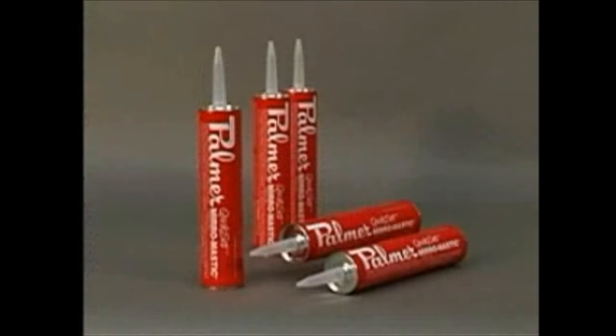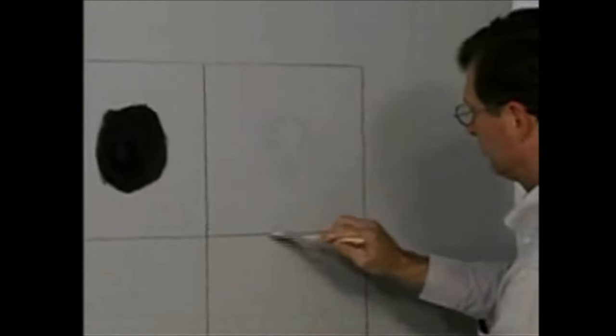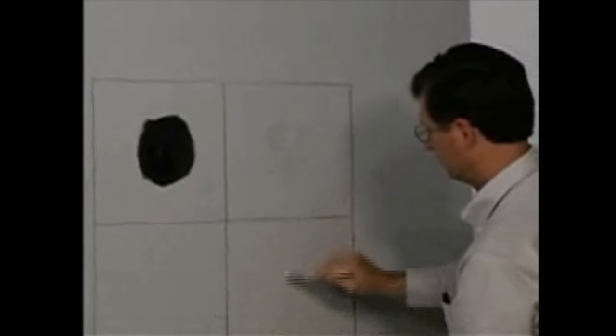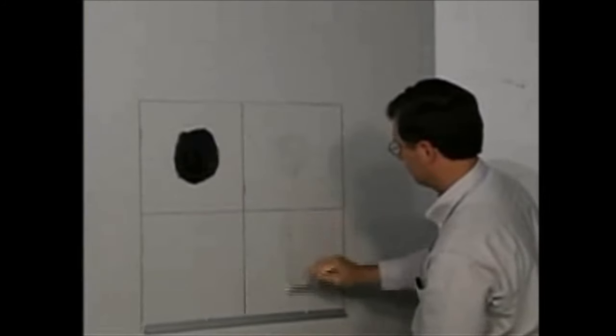The next mastic we will demonstrate is fast-curing Palmer quick set for plate glass mirror only. On porous substrates, like our drywall here, a primer or sealer, oil-based is best, water-based is okay, should be used. Never use paint or mirror mastic bond.